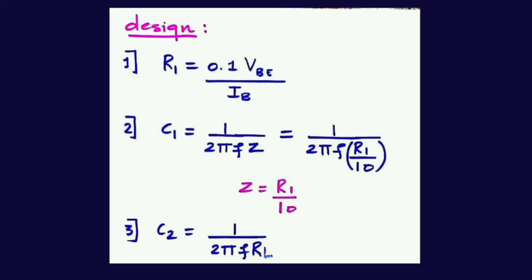Now, the design part of the capacitor coupled non-inverting amplifier. These design formulas will be helpful in solving the problems. First, R1 will be equal to 0.1 times of VBE by IB. These values are available in the specifications — VBE will be your applied voltage and IB will be 500 nanoamps. Number 2: C1 is equal to 1 by 2 pi F times Z, where Z will be R1 by 10. By substituting that, you get C1 equal to 1 by 2 pi F into R1 by 10.